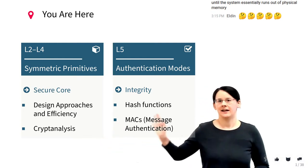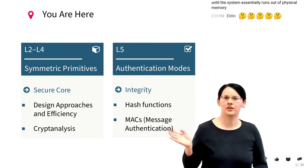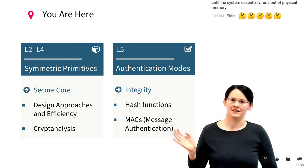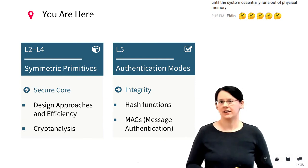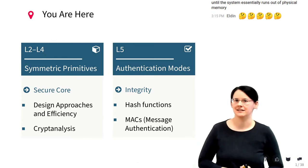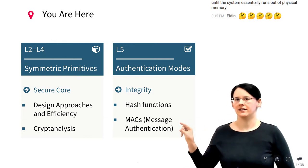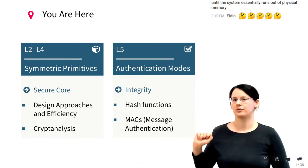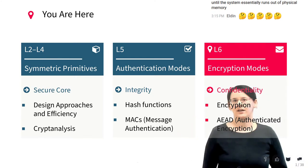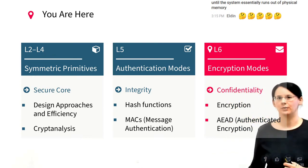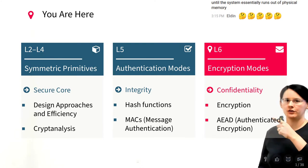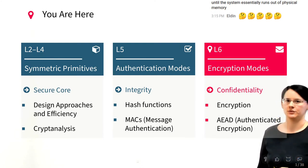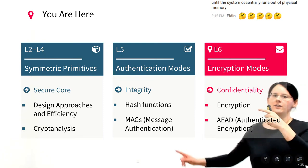Last week and in today's exercises we talked about modes for authentication — asserting the integrity of data — which included hash functions and message authentication codes. Today we're going to revisit and reuse what we defined last week, because today's topic is encryption modes for guaranteeing confidentiality of data. We're not only looking at pure encryption modes but also at authenticated encryption modes, which combine encryption with authentication.